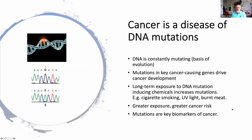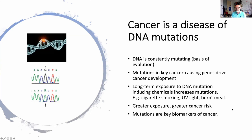Because mutations are so closely linked to cancer development, they are really good biomarkers. I work on a type of cancer called esophageal adenocarcinoma — unfortunately a cancer associated with poor survival. This graph from Cancer Research UK shows survival rates across different cancer types. The average survival rate is 54 percent, but esophageal cancer has only a 15 percent five-year survival rate, meaning 85 percent of patients diagnosed with this cancer will unfortunately die within those five years.